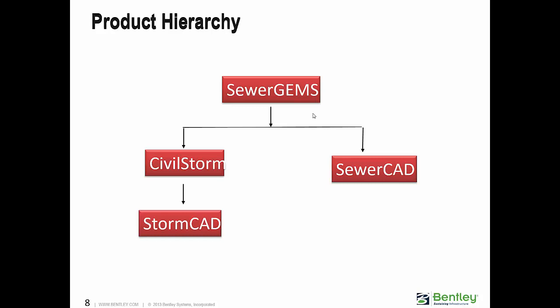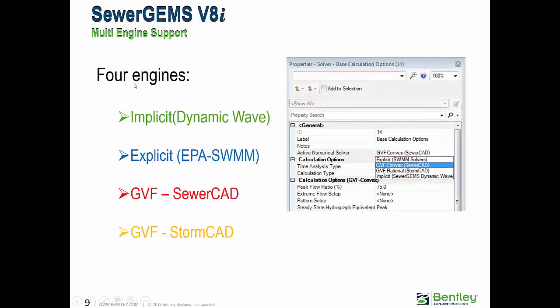SewerGEMS is a superset of StormCAD, CivilStorm, and SewerCAD — basically a combination of four different softwares. It includes four engines: the Implicit Dynamic Wave Engine, the Explicit EPA SWMM Engine, the GVF Convex Engine which is the engine for SewerCAD, and the GVF Rational Engine which is the engine for StormCAD.